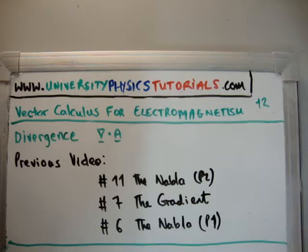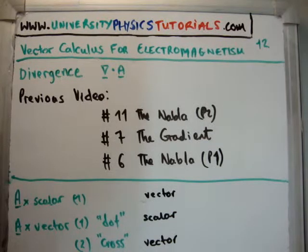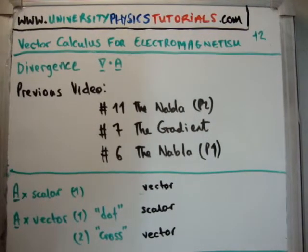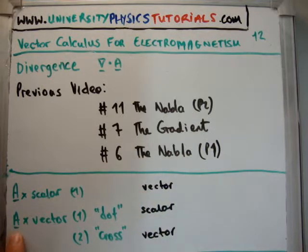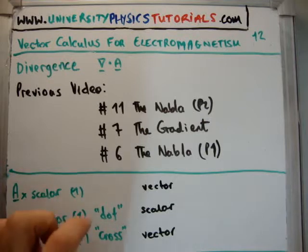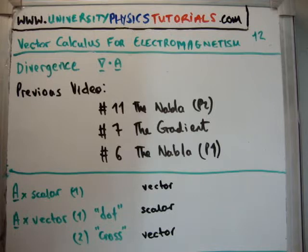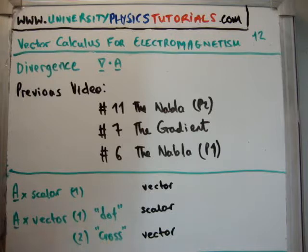A bit of revision. If you're talking about a vector, let's say A, there are three things you can do with a vector. You can multiply it by a scalar, and the outcome is you get back a vector. Then, if you multiply a vector by another vector, there are two ways you can do it. The first way is by the dot product, and the second way is by the cross product. The dot product is also known as the scalar product, so you get back a scalar. And the cross product is also known as the vector product, and you get back a vector.